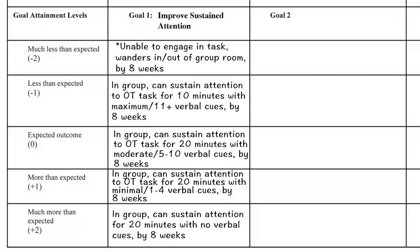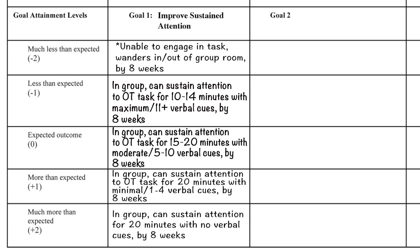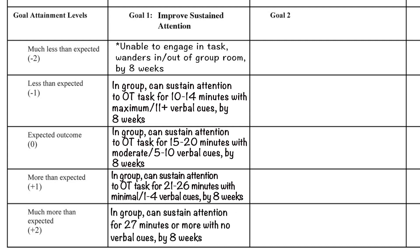Here's another example of missing values. How would you score the level of attainment if the client was able to sustain attention for 15 or 18 minutes? It's best to use a range of values to capture all possible outcomes. For example, minus one could be 10 to 14 minutes, zero could be 15 to 20 minutes, plus one could be 21 to 26 minutes, and the plus two level could be 27 or more minutes.